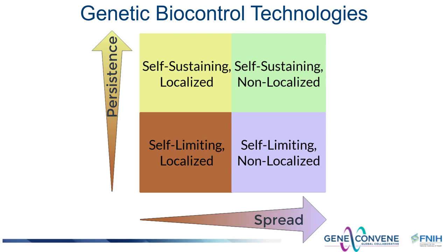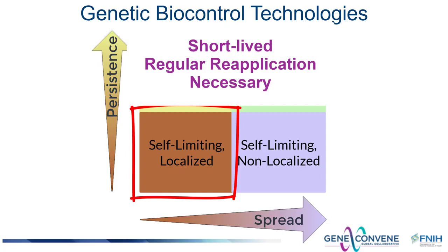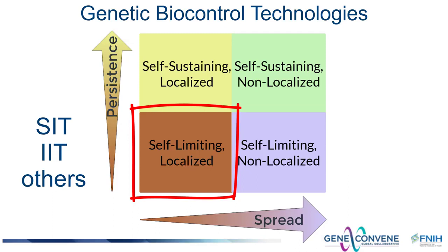There is a constellation of genetic biocontrol technologies whose characteristics vary considerably with respect to their planned persistence and spread within the environment following their introduction. Some genetic biocontrol technologies have characteristics that parallel insecticides in that they remain in the environment for short times and need to be reapplied regularly to sustain their control effects. Technologies such as the sterile insect technique and the incompatible insect technique are two examples.